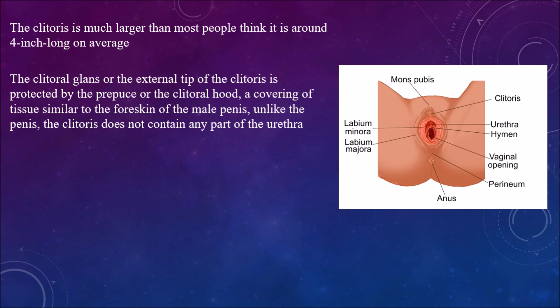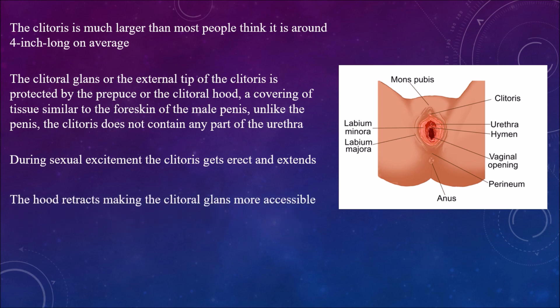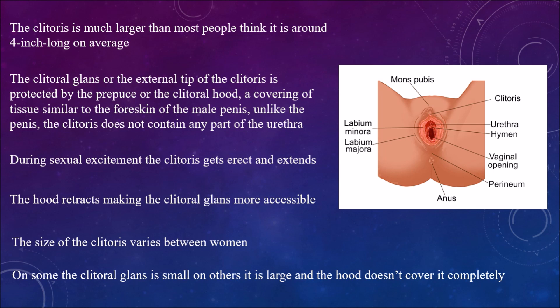During sexual excitement, the clitoris becomes erect and extends. The hood retracts, making the clitoral glans more accessible. The size of the clitoris varies from woman to woman — in some the clitoral glans is small and in others it is large — and the hood may not cover it completely.